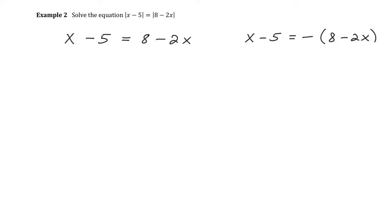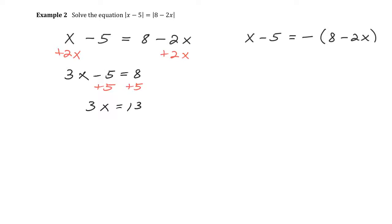Solving the first equation, X minus 5 equals 8 minus 2X: I add 2X to both sides to get 3X minus 5 equals 8, then add 5 to both sides to get 3X equals 13, and dividing both sides by 3 gives X equals 13 thirds.